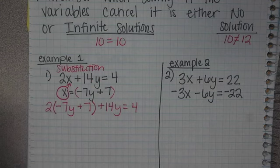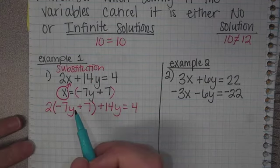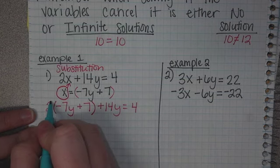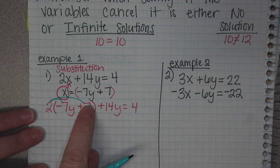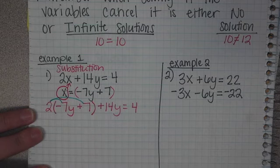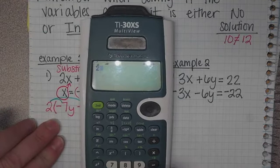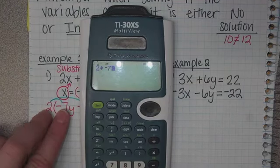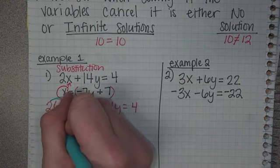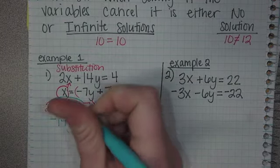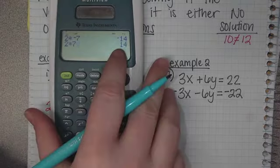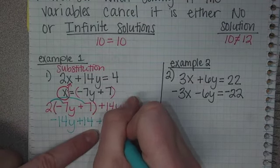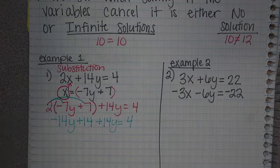Now, we are going to have to distribute because we're trying to get the variables isolated or by themselves. Distribute that 2 into both of those. In your calculator, you're going to do 2 times negative 7. When we multiply in our calculator, you ignore the variables and just multiply the two numbers together. 2 times negative 7 is negative 14y. 2 times 7 is positive 14. Then this doesn't change, so plus 14y equals 4.